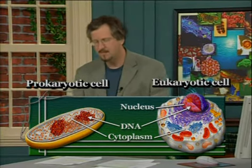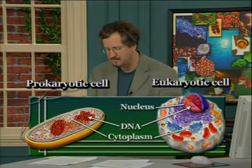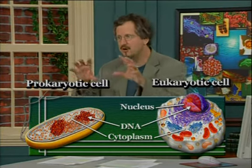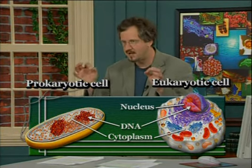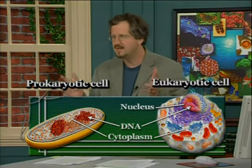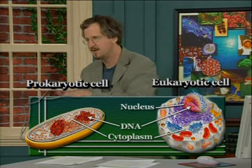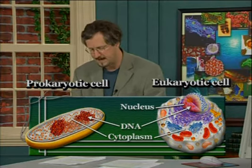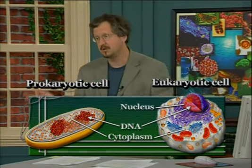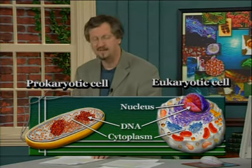In eukaryotes, the messenger RNA transcript must be exported out of the nucleus before translation can begin. If you look closely at the nuclear envelope with an electron microscope, you see that there are many little pores, and literally the mRNA transcripts have to be transported through those pores from the nucleus out into the cytoplasm. In prokaryotes, transcription, translation, and replication all occur in the same place — in the cytoplasm by definition, because prokaryotes have no organelles.